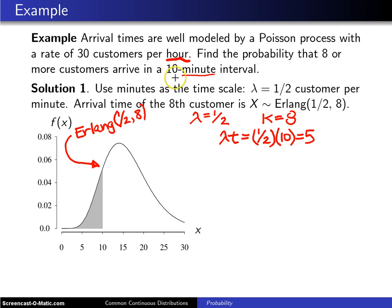Our rate over the 10-minute interval will be five customers during that interval. Then what we do is find the probability that the random variable X, which is the arrival time of the eighth customer, is less than or equal to 10.